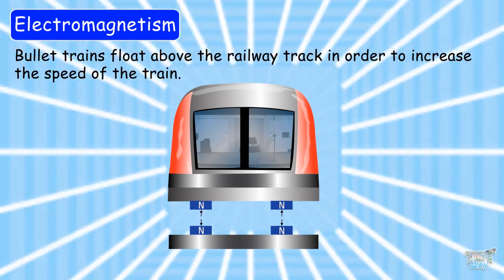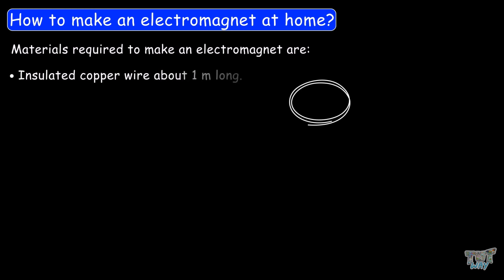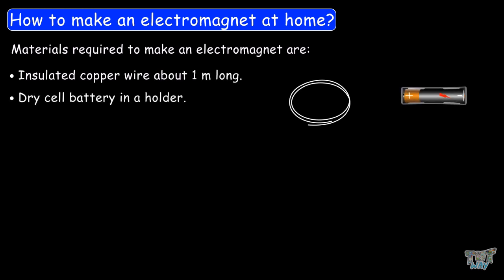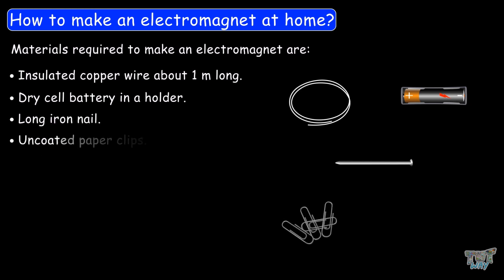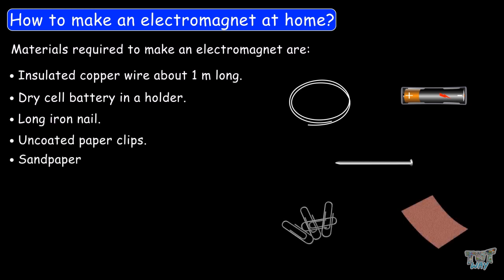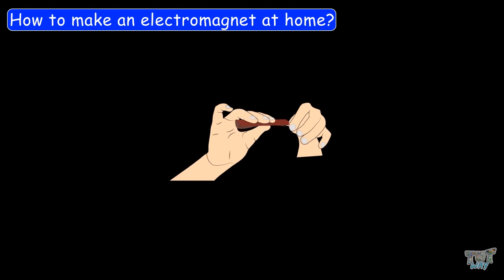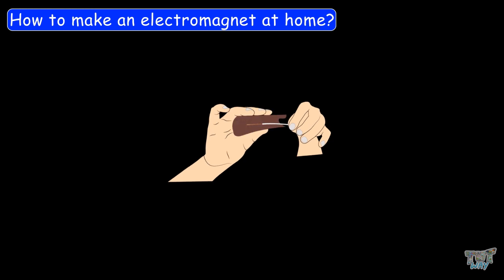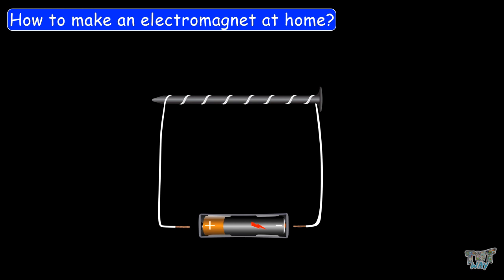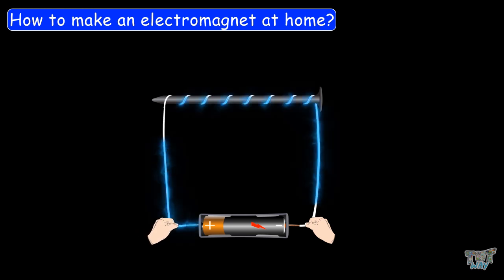Friends, you can also make your own electromagnet at home. The materials required are: insulated copper wire about 1 meter long, a dry cell battery in a holder, a long iron nail, uncoated paper clips, and sandpaper. First, remove the insulation from the ends of the copper wire with sandpaper. Then wrap the wire tightly around the iron nail in a spiral manner, making sure there is enough wire at each end to connect to the battery. Connect one end of the wire to one terminal of the battery, and the other end to the other terminal.